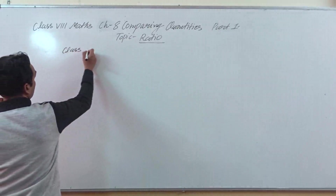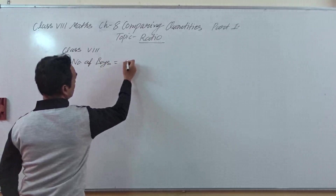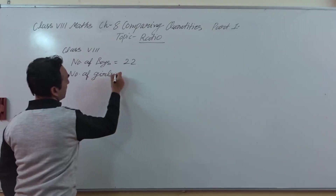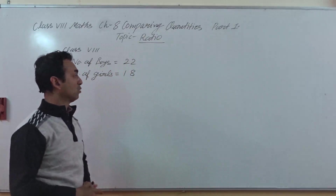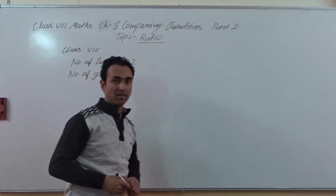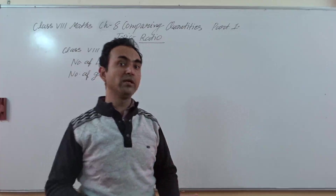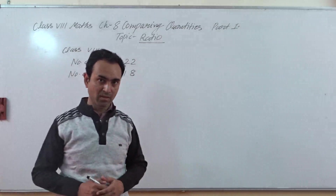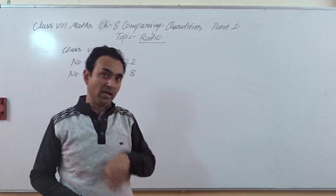Suppose in Class 8, the number of boys equals 22 and the number of girls equals 18. So we note down here: number of boys is 22, number of girls is 18. How can we compare — how many times is the number of boys compared to the number of girls, or how many times is the number of girls compared to the number of boys? There are two things: boys and girls.